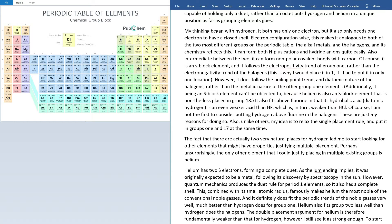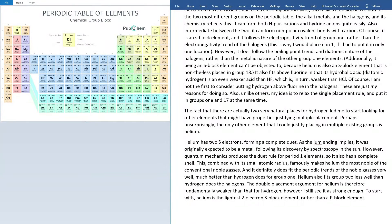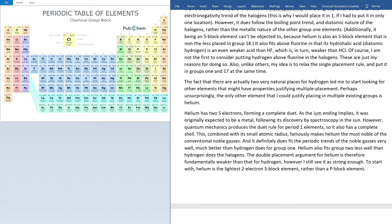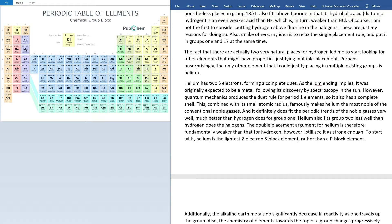Probably the main difference between me and others is that my idea is to relax the single-placement rule and put it in both places rather than having to decide between the two. The fact that there are actually two very natural places for hydrogen led me to start looking for other elements that might have properties justifying multiple placement. Perhaps unsurprisingly, the only other element that I could justify placing in multiple existing groups is helium. Helium has two S-electrons forming a complete duet. As the -ium ending implies, it was originally expected to be a metal following its discovery by spectroscopy in the sun. However, quantum mechanics produces the duet rule for period one, so it also has a complete shell.